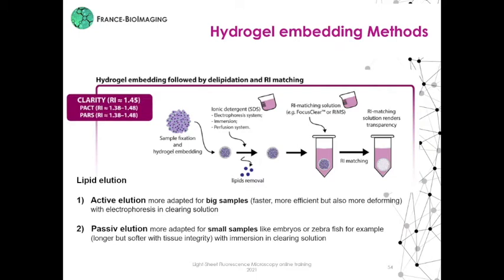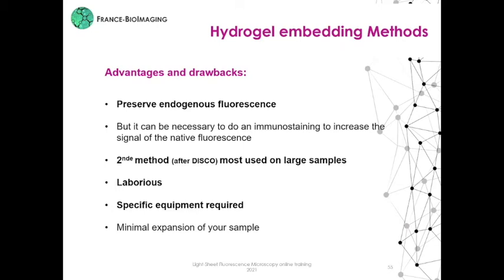To summarize the advantages and the drawbacks of hydrogel embedding clearing methods: they preserve endogenous fluorescence, but it can be necessary to do immunostaining to increase the signal. It is the second most used method for large samples. They are laborious, require specific equipment, and there can be minimal expansion of your sample.